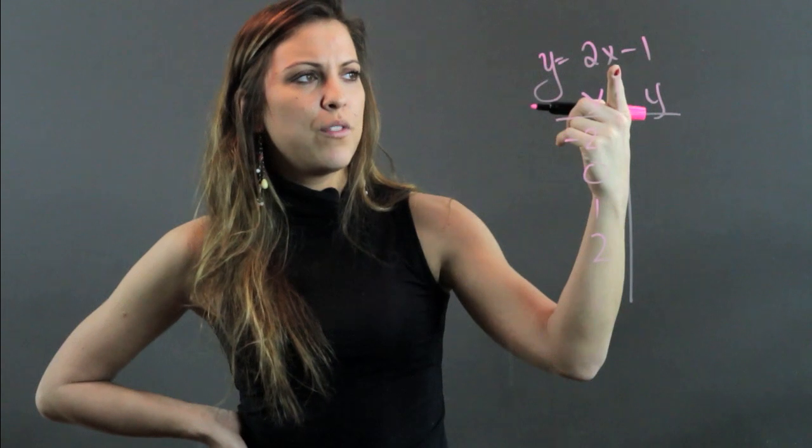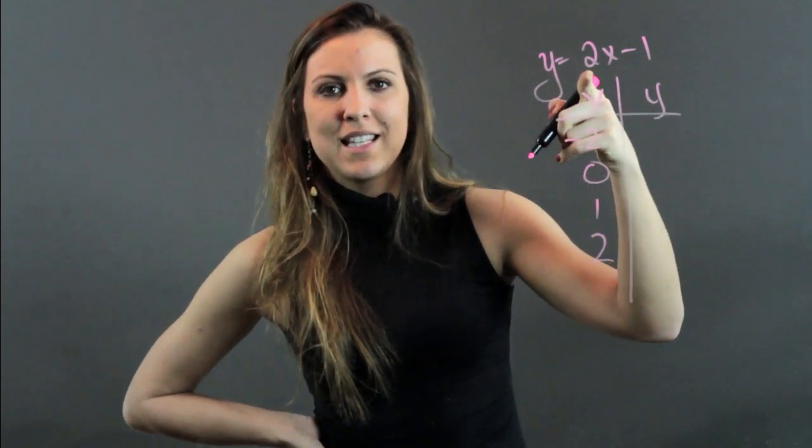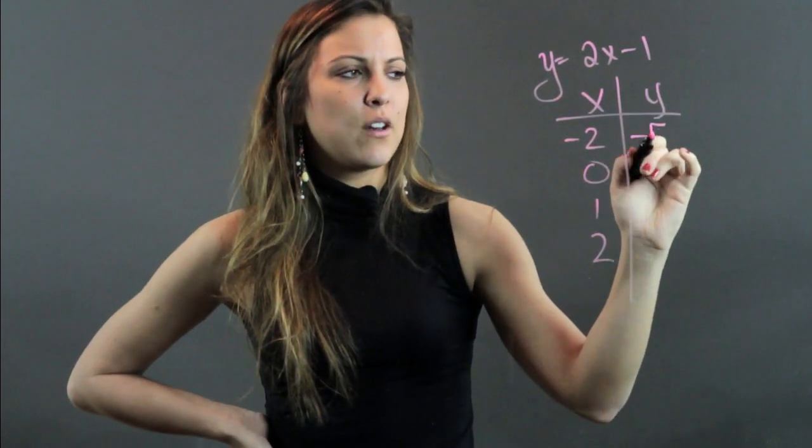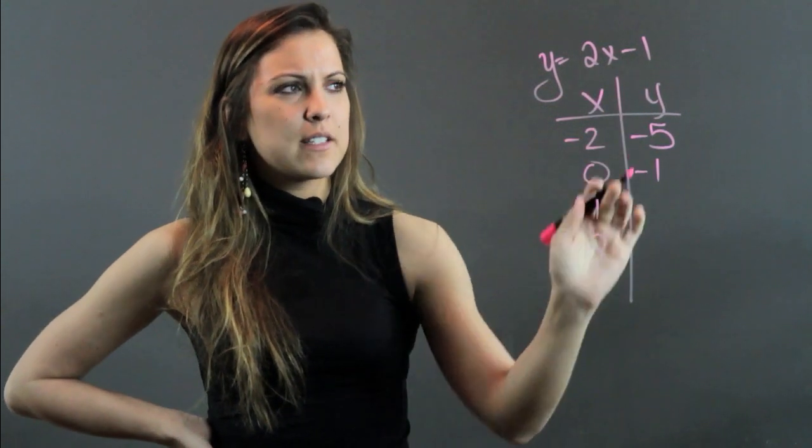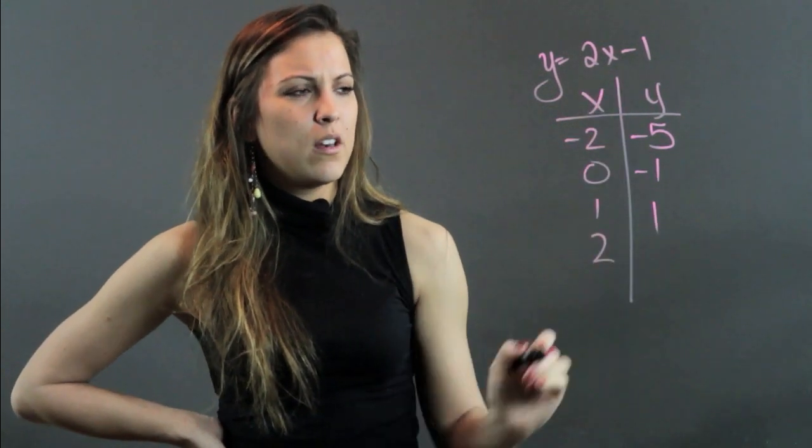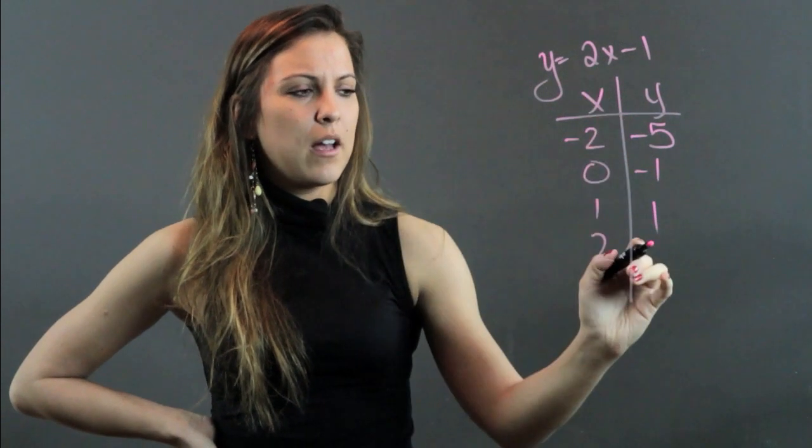So if x is negative 2, then we have 2 times negative 2 is negative 4 minus 1 is negative 5. If x is 0, then y becomes negative 1. If x is 1, y becomes 1. And if x is 2, y becomes 3.